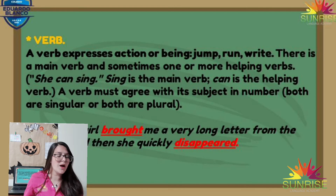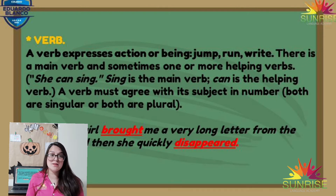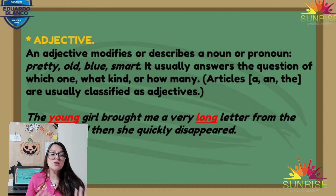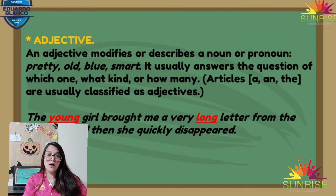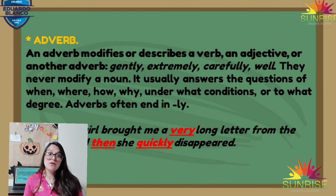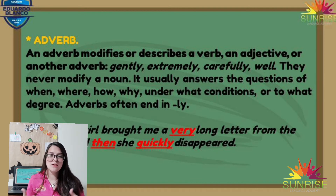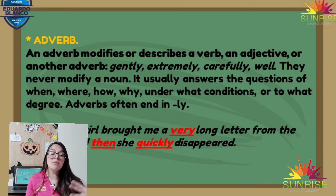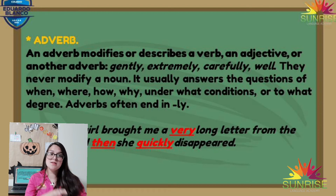The verb tells us what is going on in the sentence. Then we have the adjective, which modifies or describes the noun or pronoun — it gives us more characteristics of the thing we're talking about. Then we have the adverb, which describes the adjective or the verb, giving us a lot more information to know what is going on with the person and the action in the sentence.